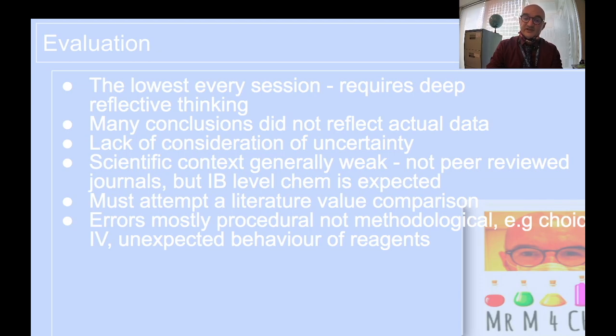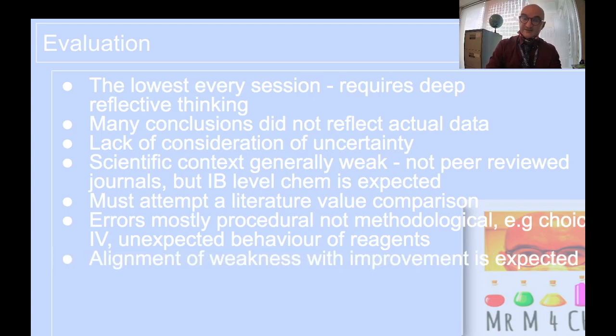Errors are mostly procedural. So, I spilt something, or something evaporated, or there's parallax error. That's low marks. That's ones and twos out of evaluation. We want to see methodological reflection. There it is again. Reflective thinking. What was the choice of IV? Was it a good independent variable to choose? Did reagents behave in an unexpected manner? Look at the outliers. Outliers, again, there's a rich source for the top bands. And I'd always have a table. Andrew Weng, what's the weakness? What's the improvement? How would I achieve it? Job done. Middle to top bands already.